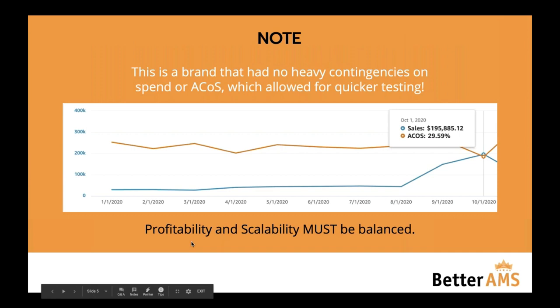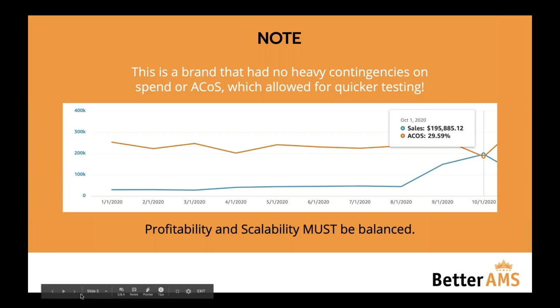A few things to note: this is a brand that had no heavy contingencies on spend or ACOS, which allowed us to go in extremely quickly and launch a ton of campaigns. If a brand says 'I want to lower my ACOS by 5%,' I'm probably not going to be launching a ton of campaigns because that's going to increase your ACOS in the beginning. We had to increase it by 7% in the second month in order to lower it from year to date. Profitability and scalability must be balanced — you have to analyze your market, analyze your product, and figure out what's going to work best for you.